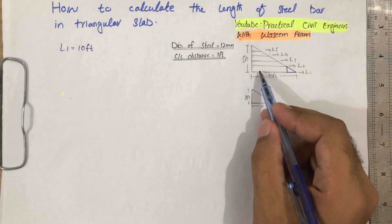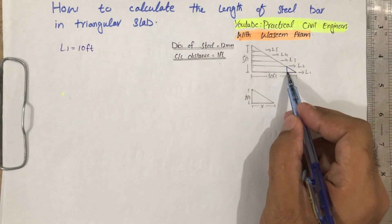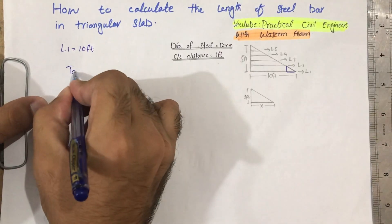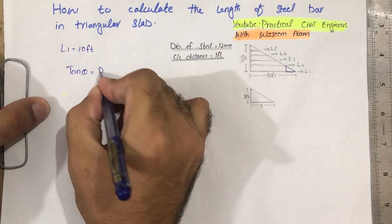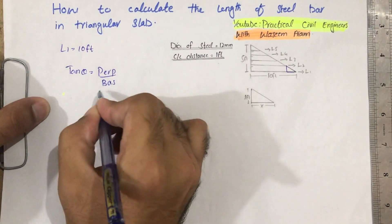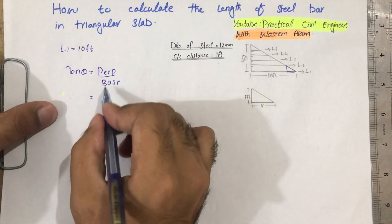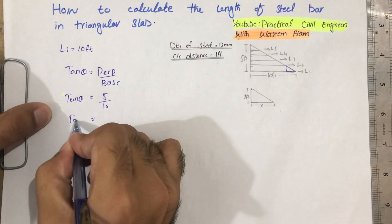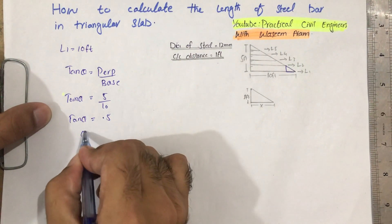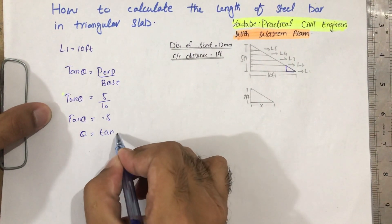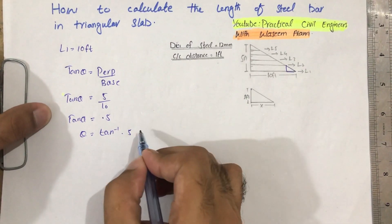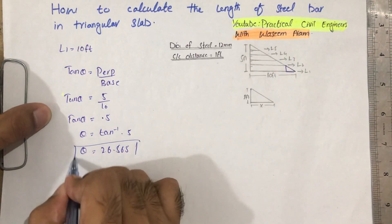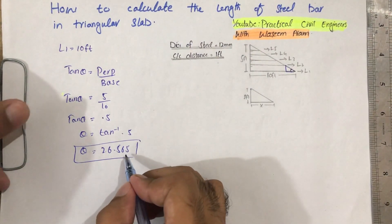I draw this shape. As we know, the center-to-center distance is 1 foot, and we have to find the distance x. For that, we use tangent theta, which equals perpendicular divided by base — that is 5 divided by 10. So tan theta equals 0.5, and therefore theta equals tan inverse of 0.5, which gives theta equal to 26.565 degrees.